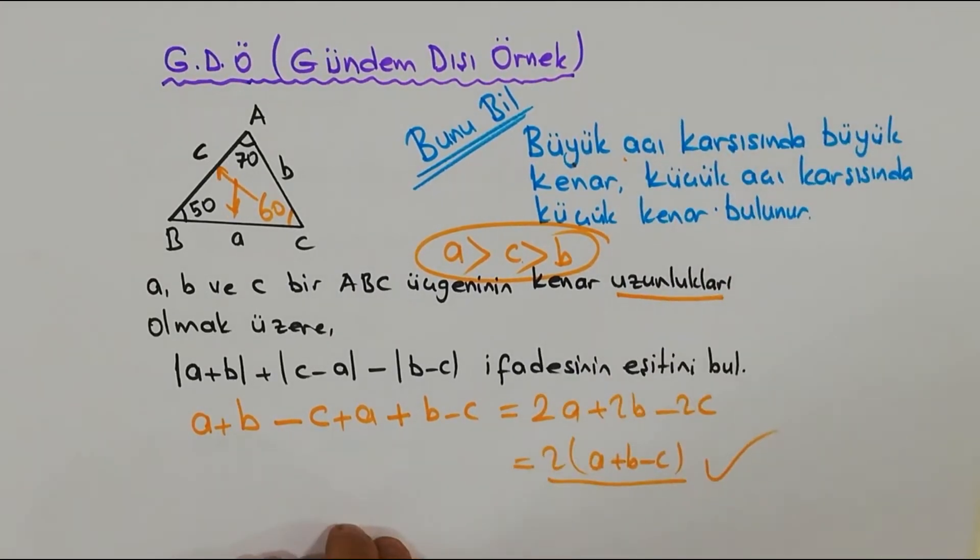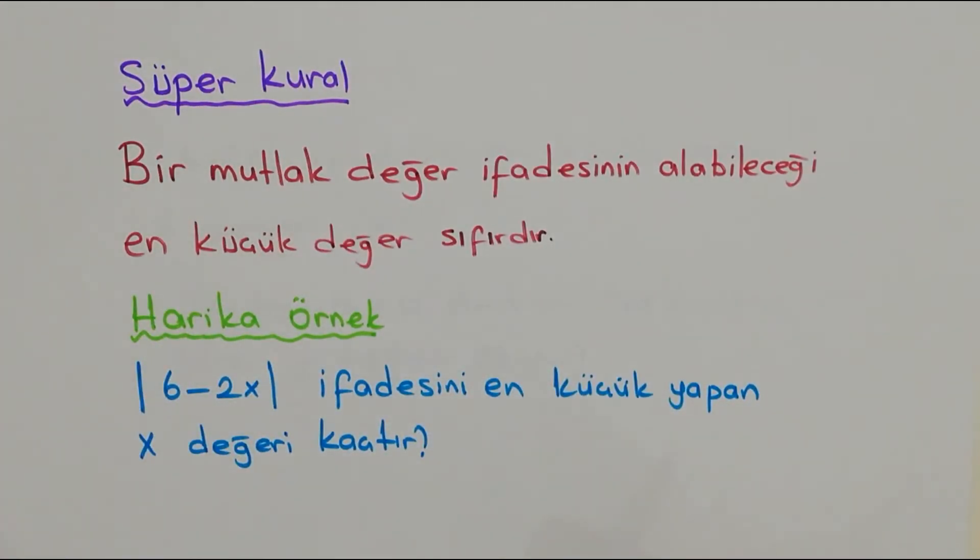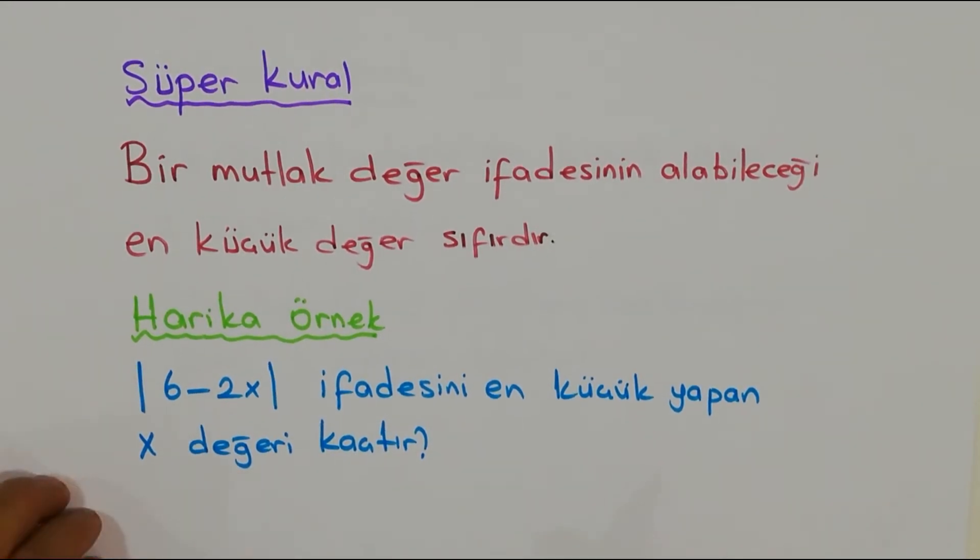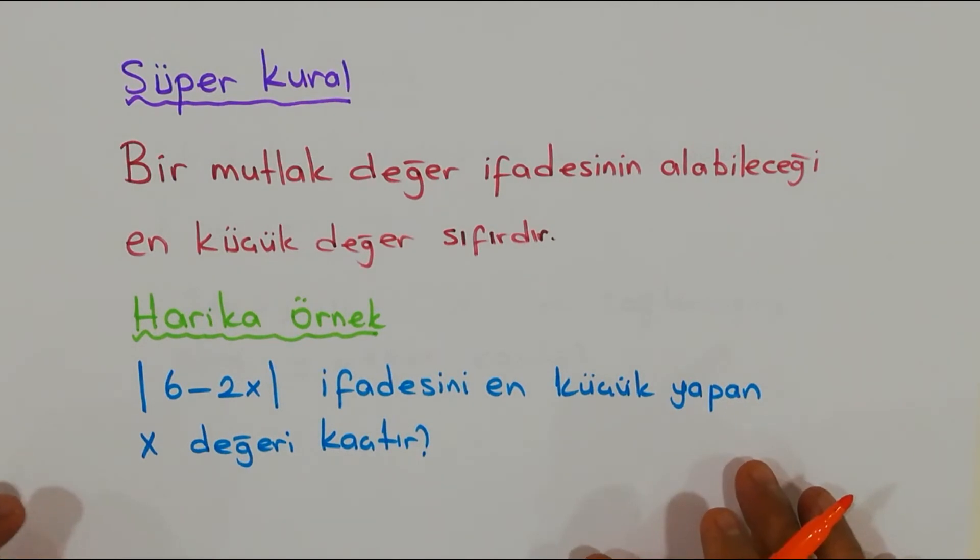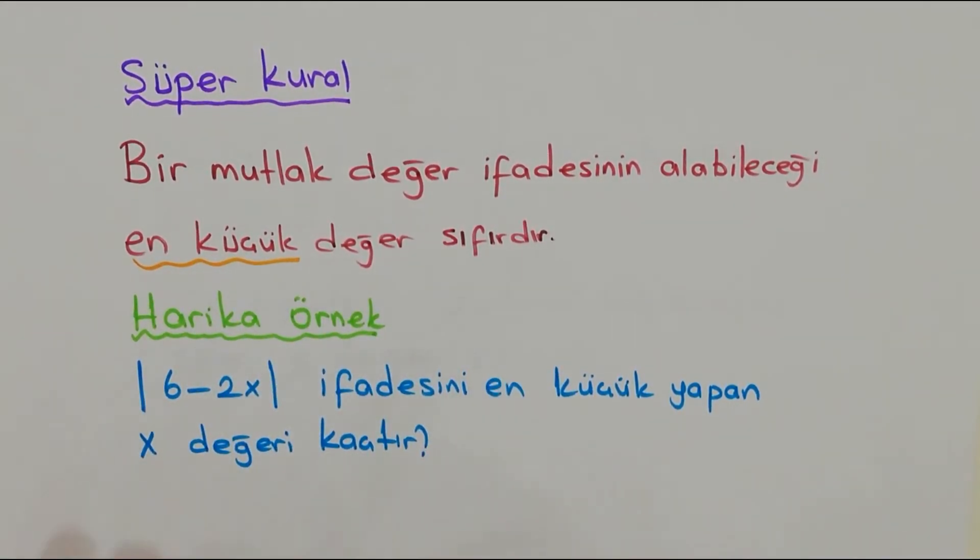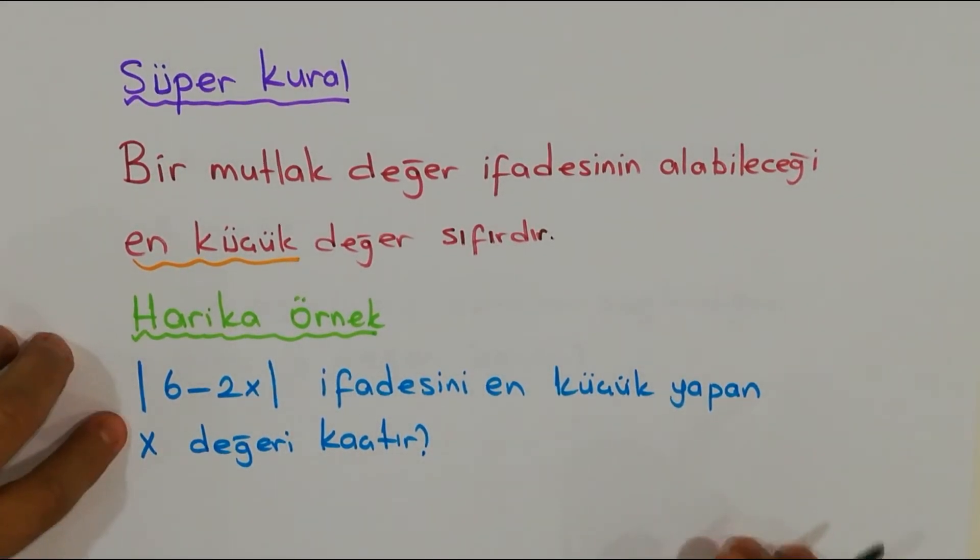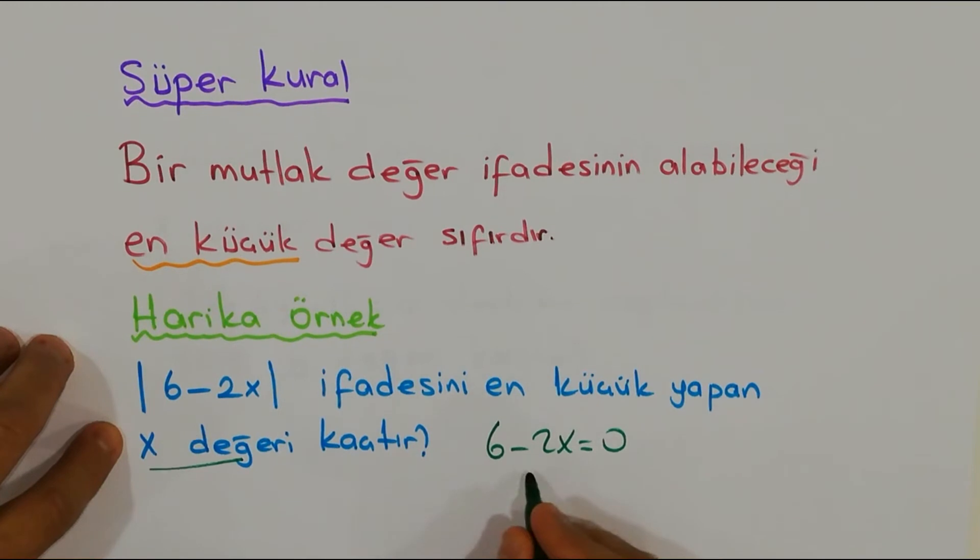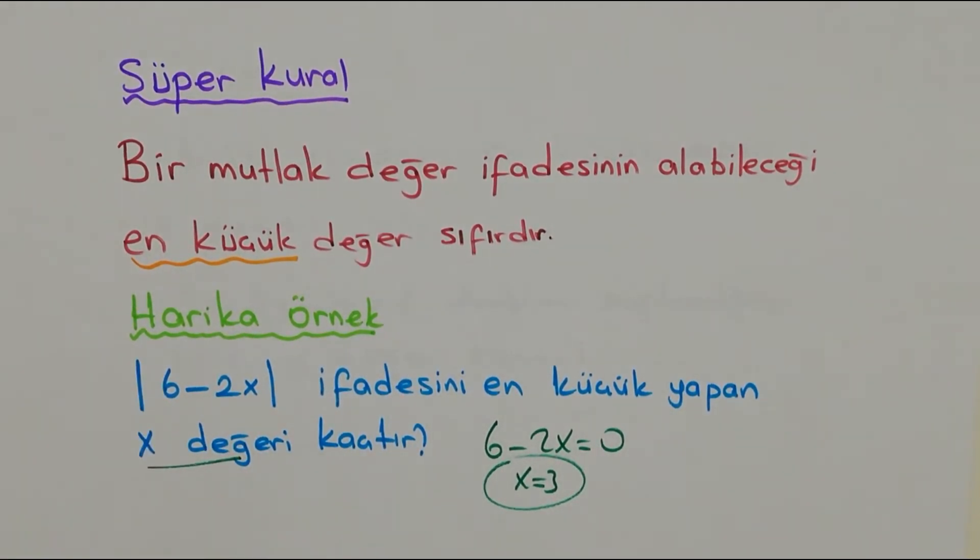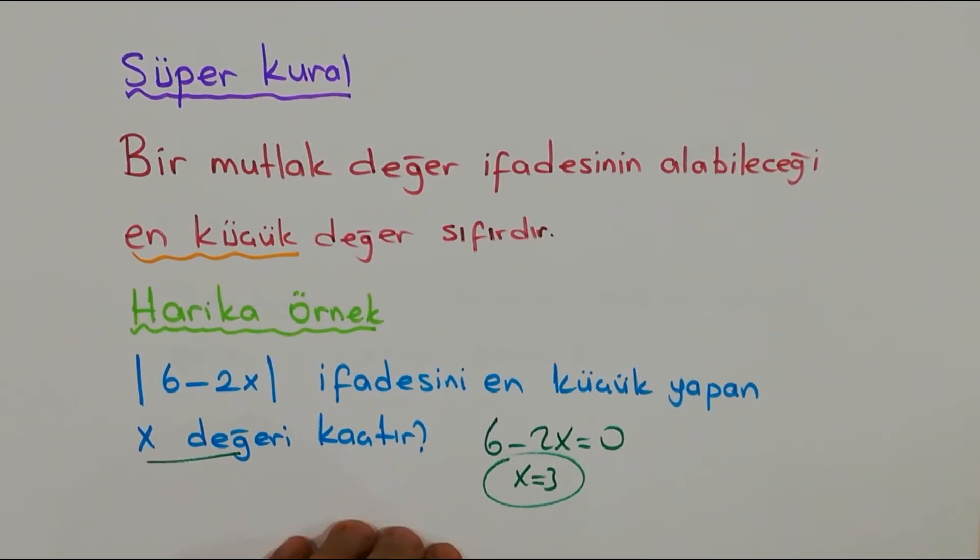Geldik süper kurala arkadaşlar. Bir mutlak değer ifadesinin alabileceği mini minnacık en küçük değeri sıfırdır. Neden? Çünkü uzaklıktan bahsettik arkadaşlar. Eğer uzaklık negatif olamıyorsa ya sıfırdır ya pozitiftir. O yüzden alabileceği en küçük değer sıfır olmalı diye değerli arkadaşlar söylüyoruz. Peki bakalım bu harika örneği, basit örneği beraber bir görelim. Neyin nesidir diyor ki? Bunu en küçük yapan x değeri kaç? Bu Afrika'nın en kolay sorusu arkadaşlar. Şöyle bunu sıfıra eşitle: x = 3, bu kadar.